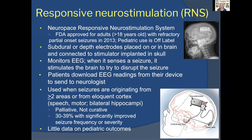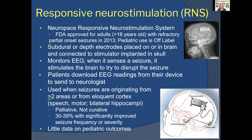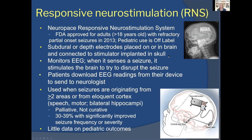The RNS is another stimulator option, implanted in the skull as a small computer that continuously reads EEG. Depth electrodes can be placed directly into bilateral hippocampi, or surface electrodes placed on eloquent temporal lobe tissue that can't safely be resected. It reads EEG 24/7 and stimulates whenever it detects a seizure. The neurologist programs the device, the patient downloads data daily or every few days, and the neurologist adjusts electrode programming to optimize seizure control. Again, this is palliative, not curative, but can achieve significant seizure reduction.